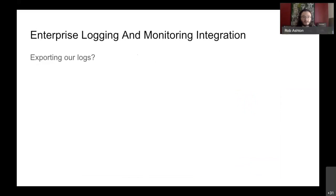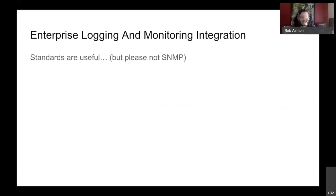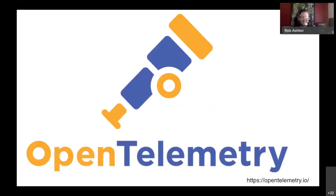A common request is to export our logs. Our logs, while quite useful to us, aren't quite useful to them. Warnings like 'this isn't going to happen' appearing in our logs doesn't actually help our customers solve issues. We can't just say 'have our logs, stick them in Logstash and do what you will,' because suddenly our logs become effectively an API we have to maintain. And our logs are for us. So standards are actually quite useful - and that's led us to look at OpenTelemetry.